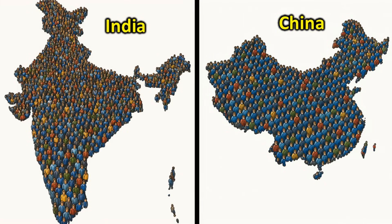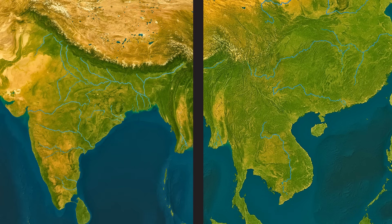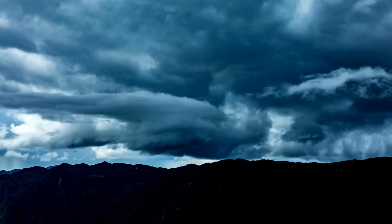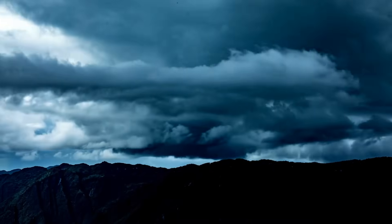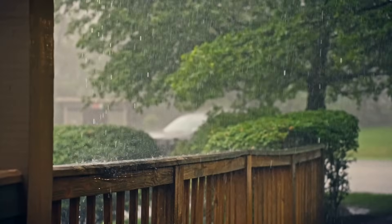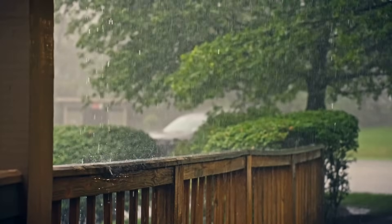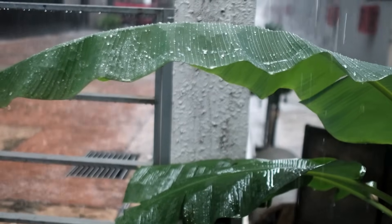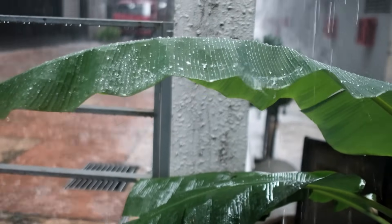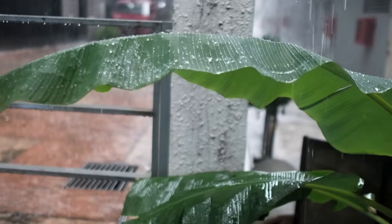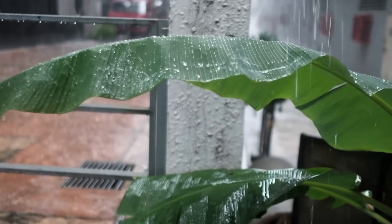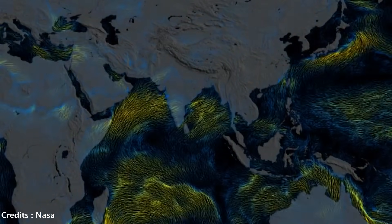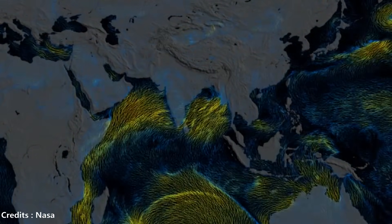But why did these regions have such large populations to begin with? One major reason is that a powerful force of nature has been shaping life in this part of the world for thousands of years. Every year, with the arrival of June, the rainy season begins in the southwestern parts of the Indian subcontinent. But what many people do not realize is that this rainy season — what we call the monsoon — is not just a local event confined to that area. It is actually part of the largest weather system on earth, called the South Asian monsoon.